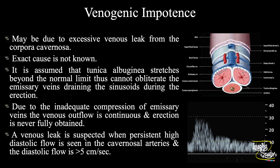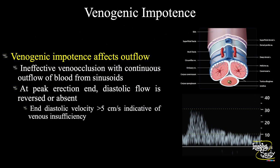Regarding the venogenic mechanism: the cause of venous leakage is unknown, but it is assumed that the tunica albuginea is stressed beyond its normal limit, so it cannot obliterate the emissary veins draining the sinusoids during erection. Due to this inadequate compression, venous outflow remains continuous — blood is delivered to the sinusoids but continuously exits via the emissary veins, so the penis cannot become rigid. Venous leakage is suspected when there is persistent high diastolic flow above 5 cm/s in the cavernosal arteries after papaverine injection, confirming venogenic erectile dysfunction.